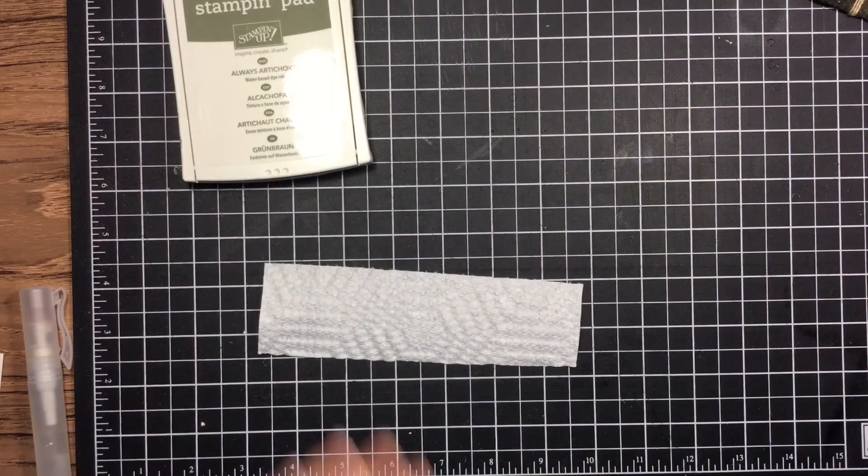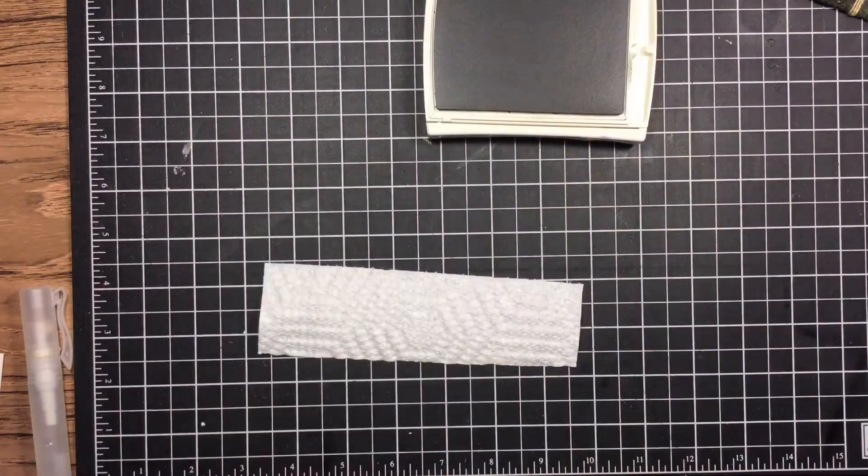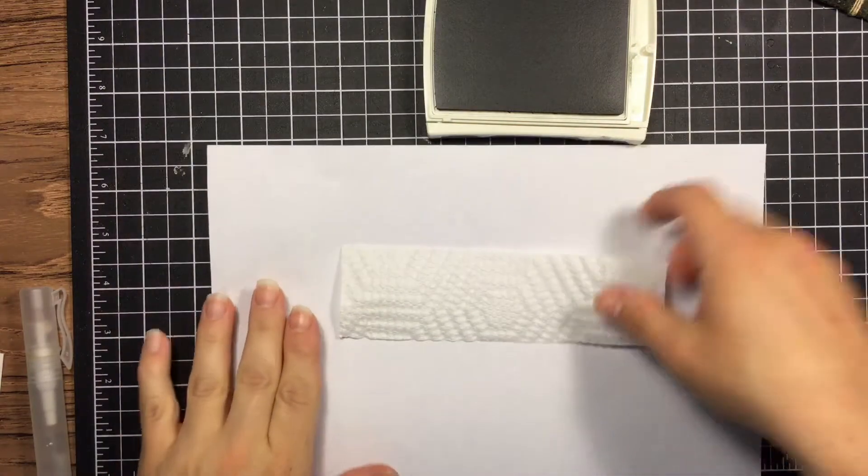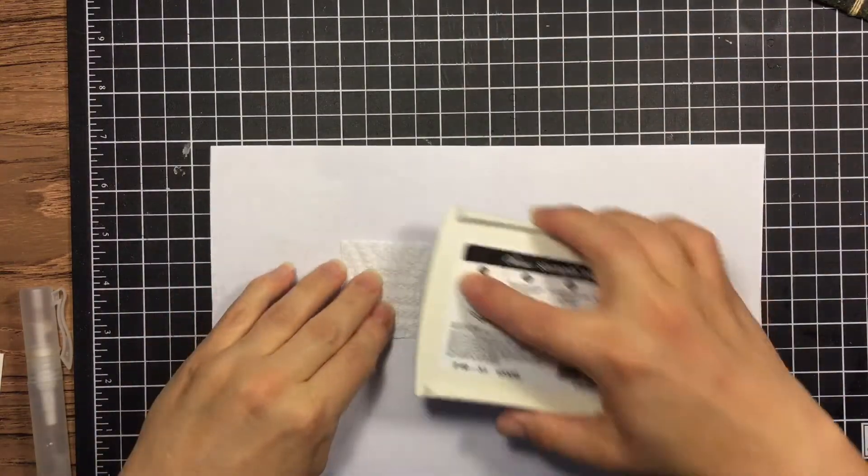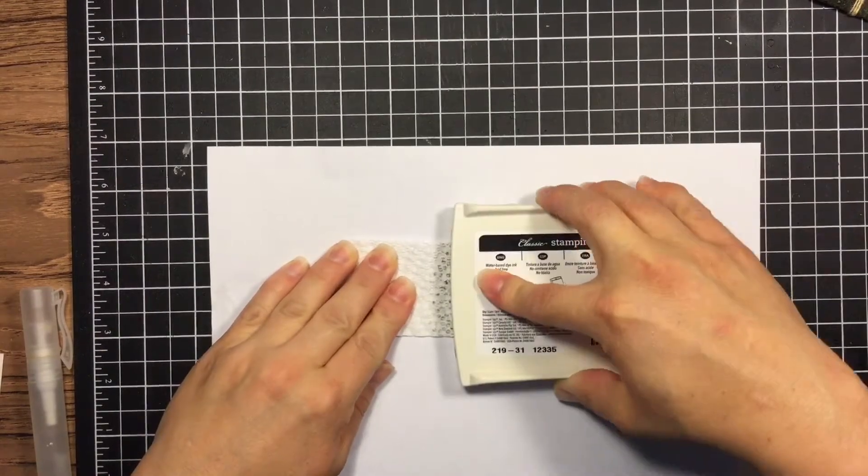What you need is paper towels and an ink pad. The paper towels that I used were Bounty. That actually has the best texture for this technique. If you use a quilted one that doesn't work as well, but find something that's got bumpies to it and good texture.